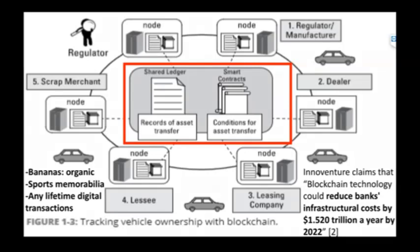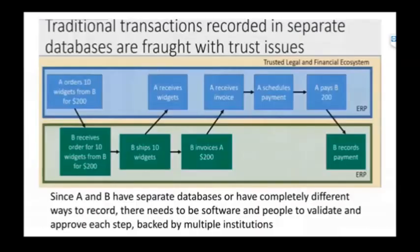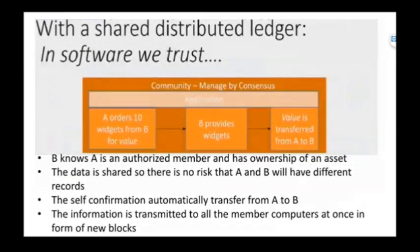For traditional transactions, when A and B have a transaction, they could have completely different data spaces and ways to record, including software and people to validate each step. With the new system, B knows A because they're on the same server, so there's no risk and you don't have to validate separately. Once a transaction is implemented, it's added to a new block subsequent to the chain.